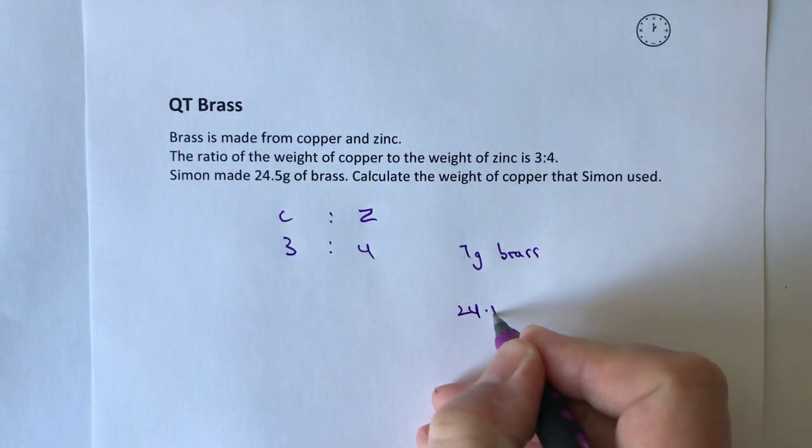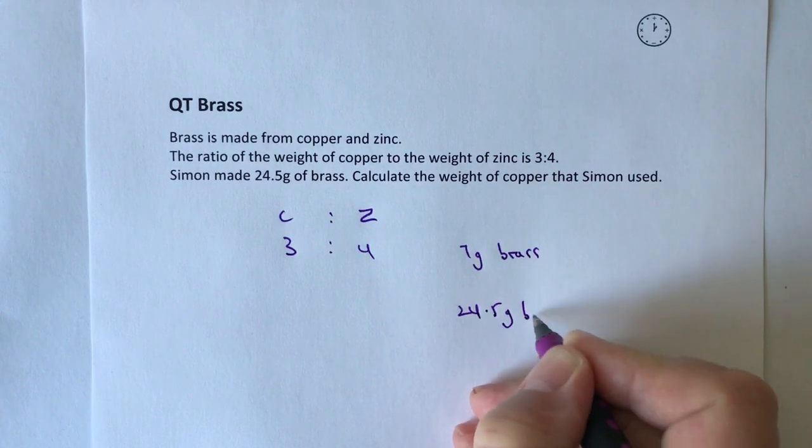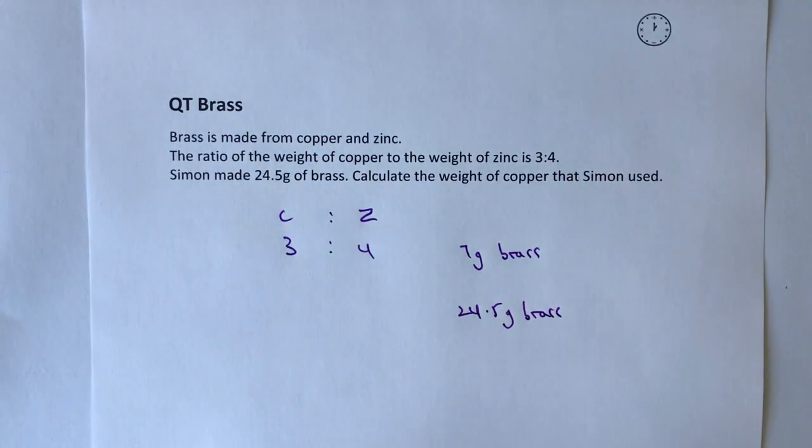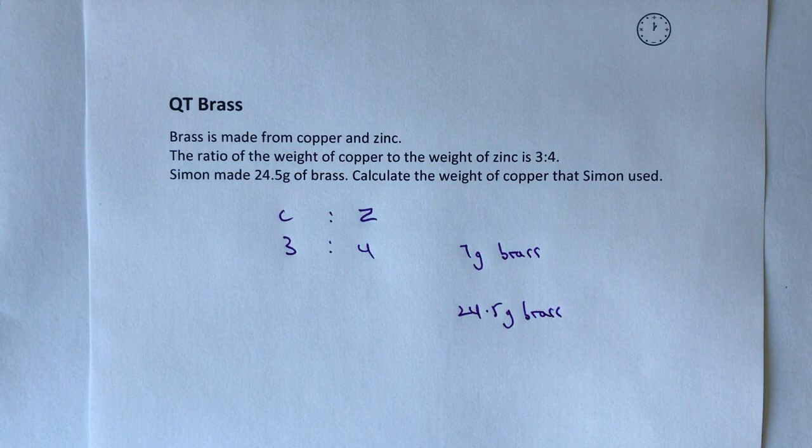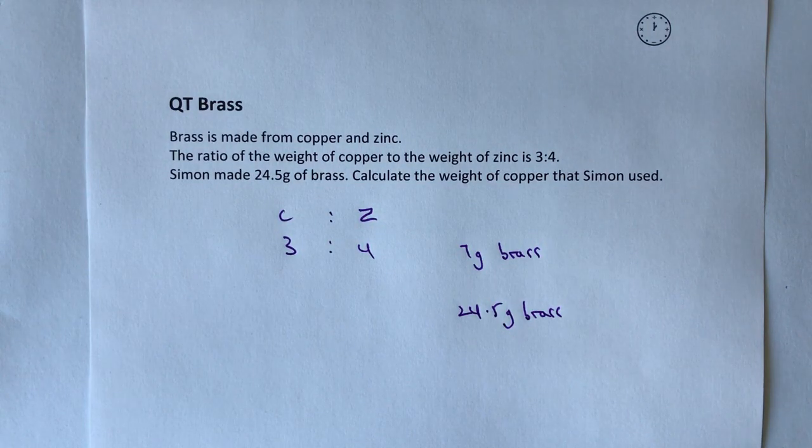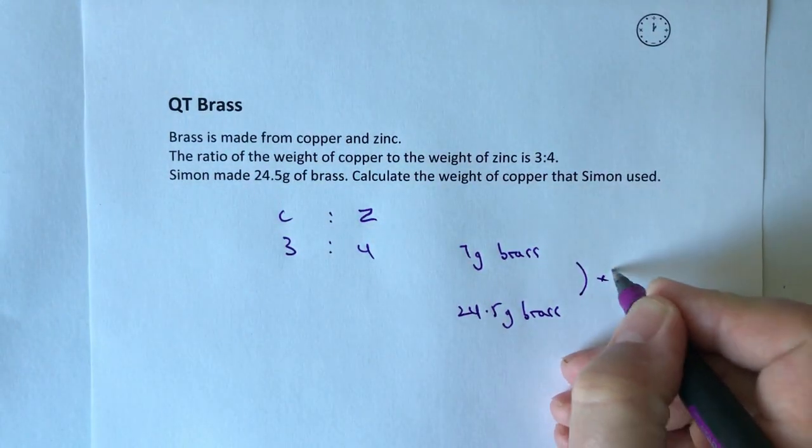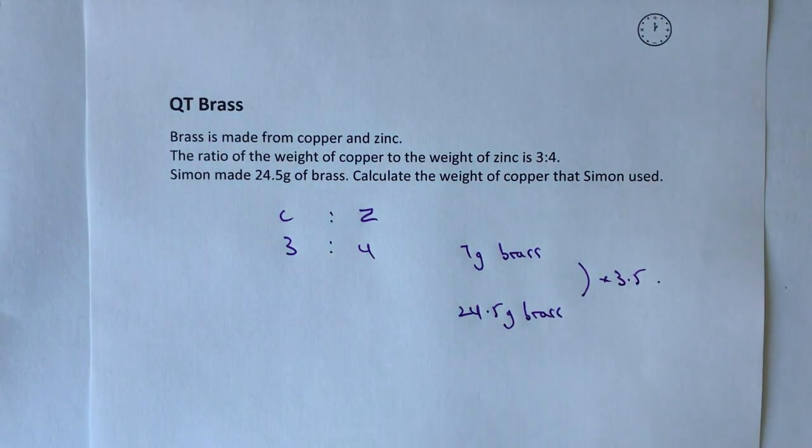Now actually, if I divide 24.5 by seven, it actually works out that it's multiplied by 3.5.